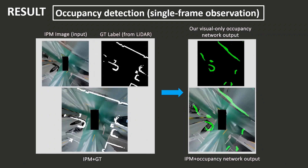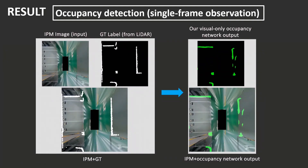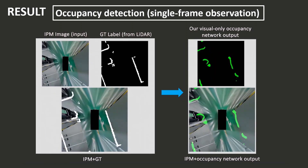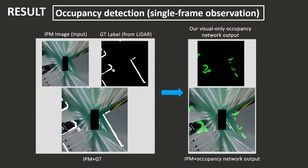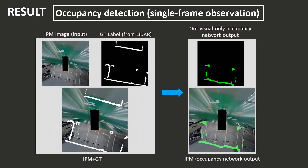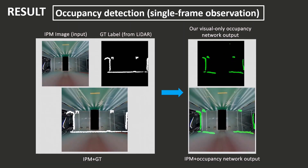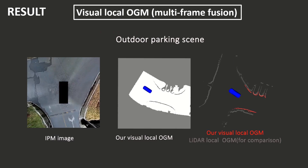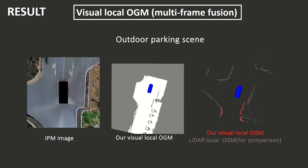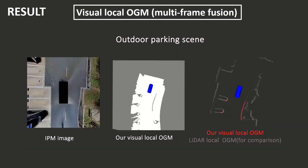We can see from the video that the output of our occupancy net achieves the same performance as LiDAR in the parking scene. The visual local OGM can be built at a high frequency with the same performance as LiDAR OGM in different scenes.